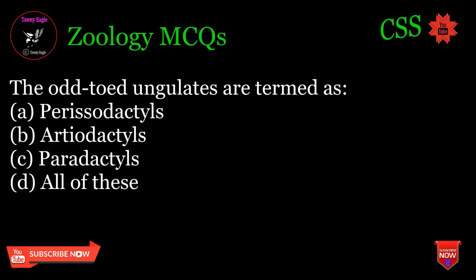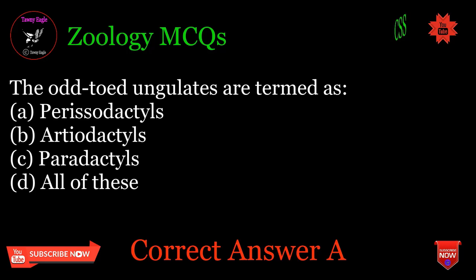The odd-toed ungulates are termed as: A. Perissodactyls, B. Artiodactyls, C. Peridactyls, D. All of these. Correct answer: A.